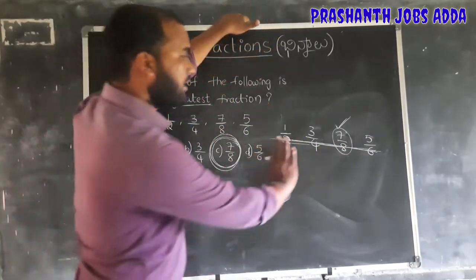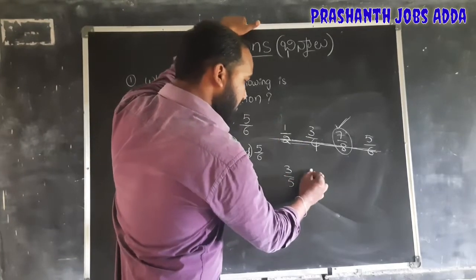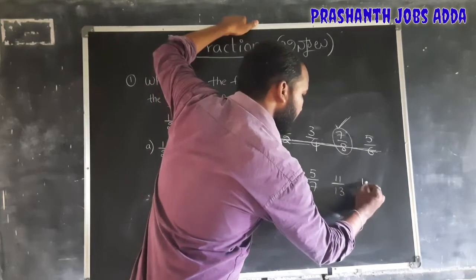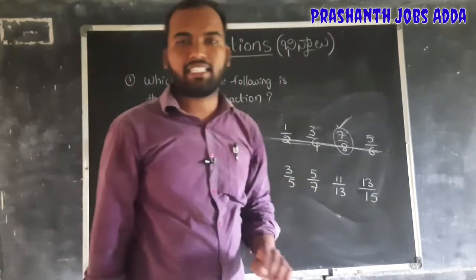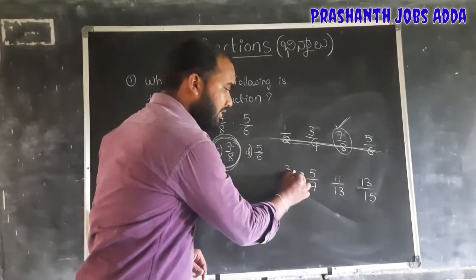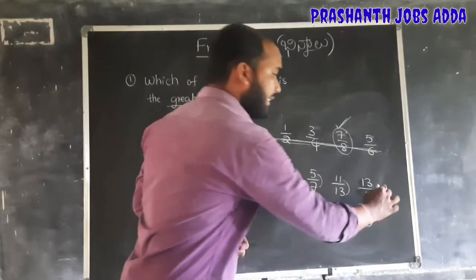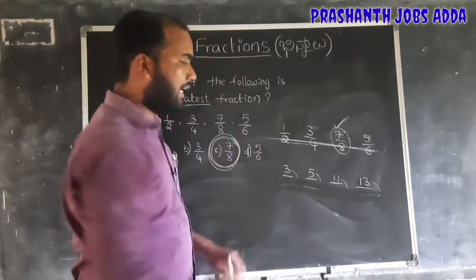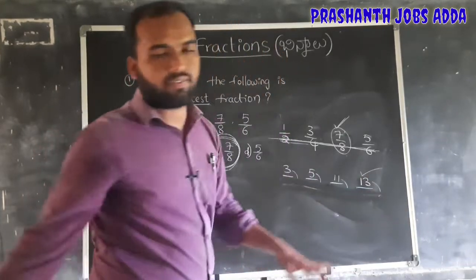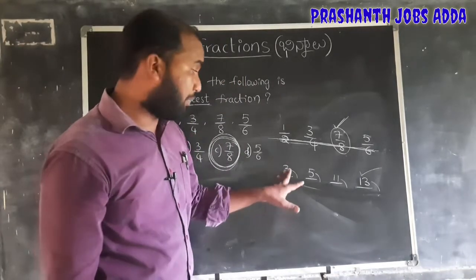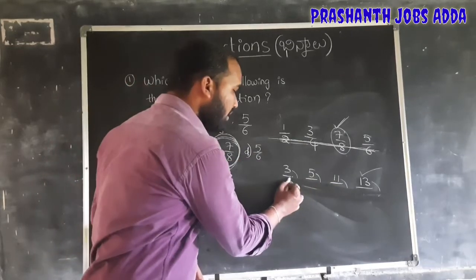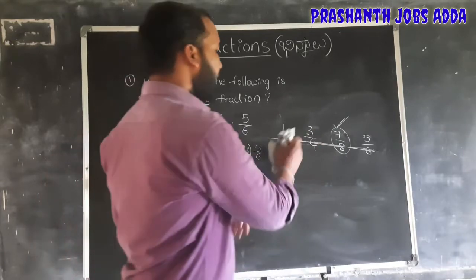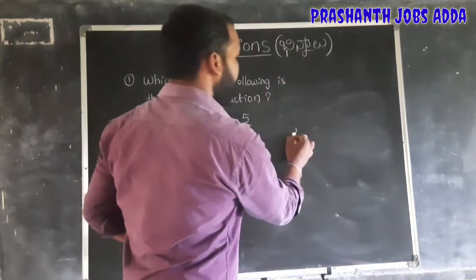For example, consider fractions 3 by 5, 5 by 7, 11 by 13, and 13 by 15. The difference between denominator and numerator is 2 for each. Since the difference is the same, just ignore the denominators and compare numerators. 13 is the greatest numerator, so 13 by 15 is the greatest fraction. The smallest fraction is 3 by 5.